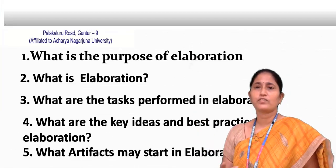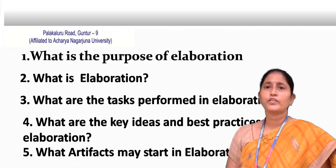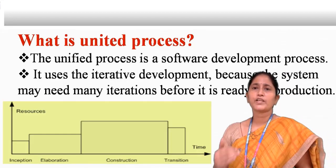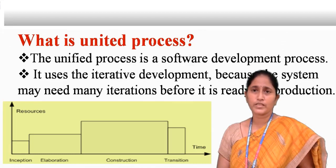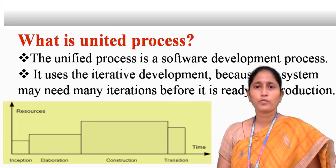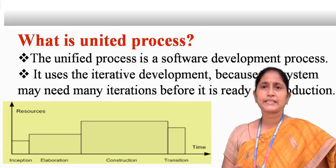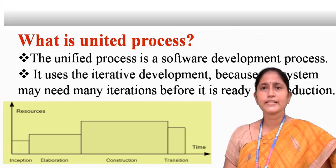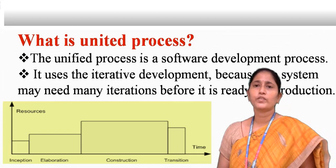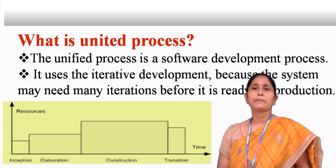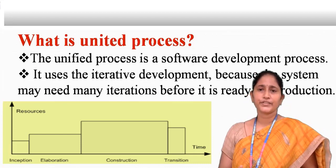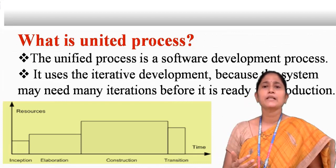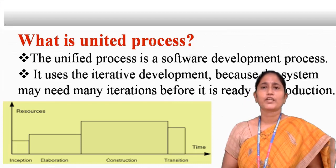Before going to this topic, we have to know about the unified process. Elaboration is the second phase of the unified process, which has four phases: the first is inception, second is elaboration, third is construction, and fourth is transition. The unified process is a software development process that uses iterative development, because the system may need many iterations before it is ready for production.